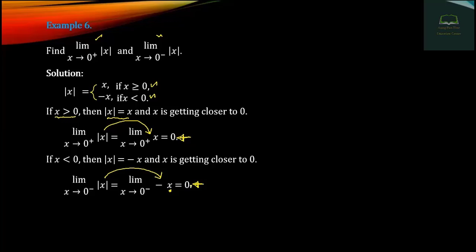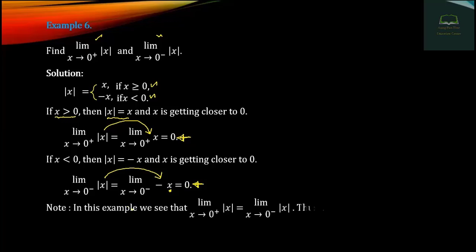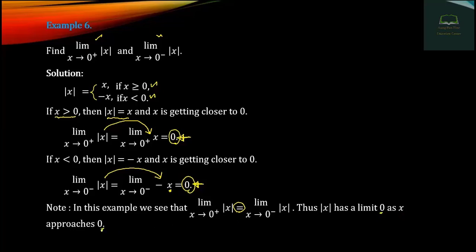The right-hand limit tends to 0 as s approaches 0. The left-hand limit also tends to 0 as s approaches 0. We are going to show that the modulus of s has a limit of 0 as s approaches 0. Since both the left-hand and right-hand limits equal 0, the limit exists and equals 0.